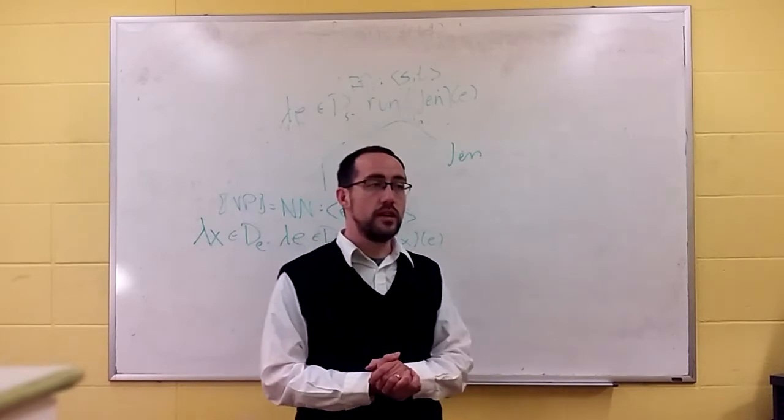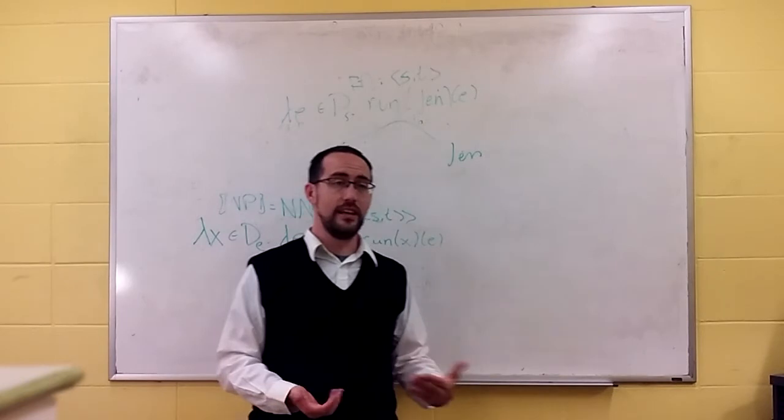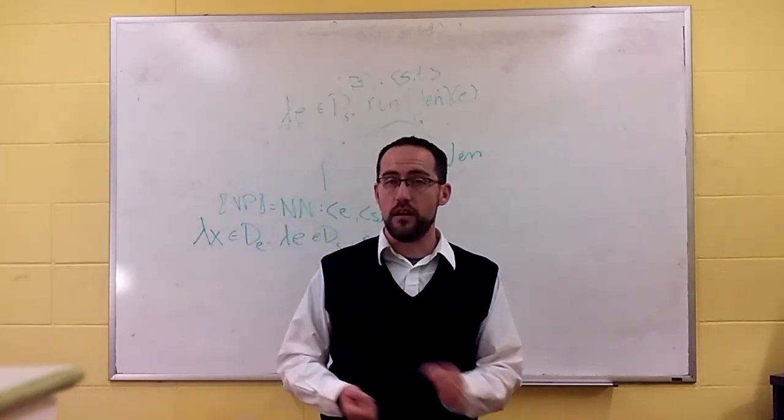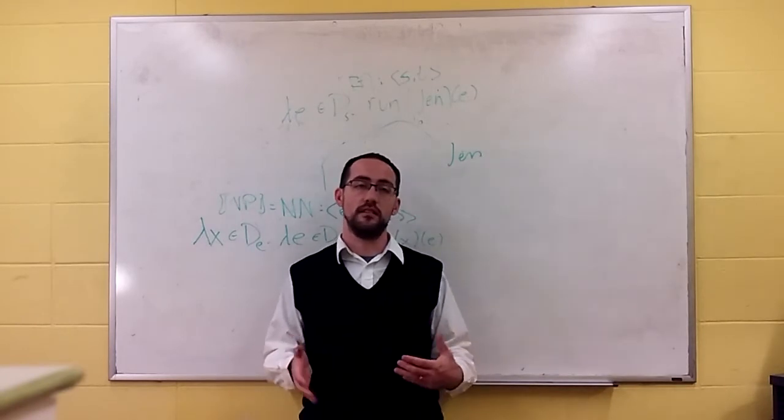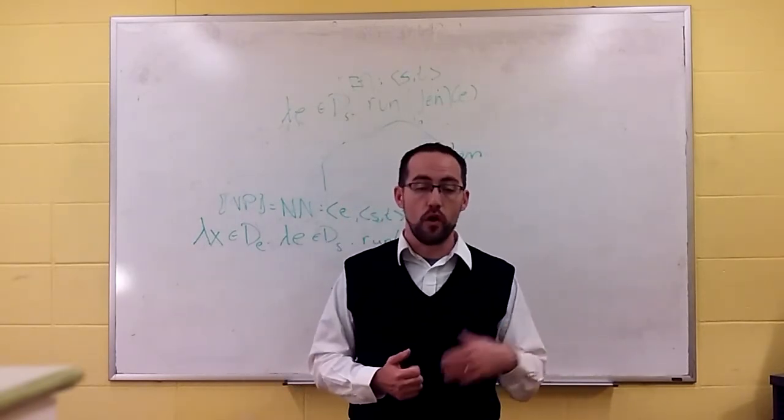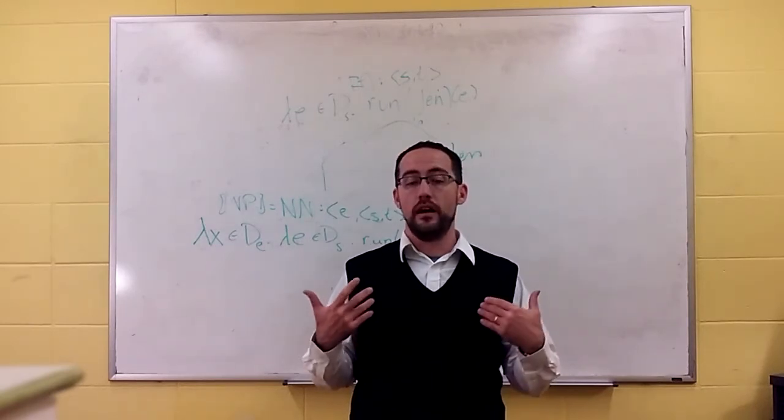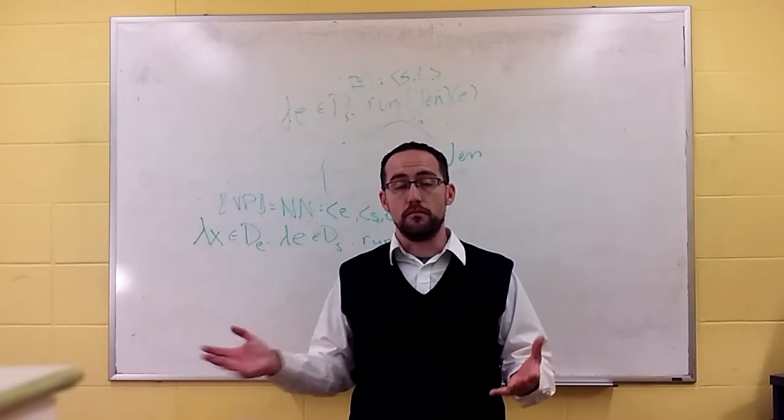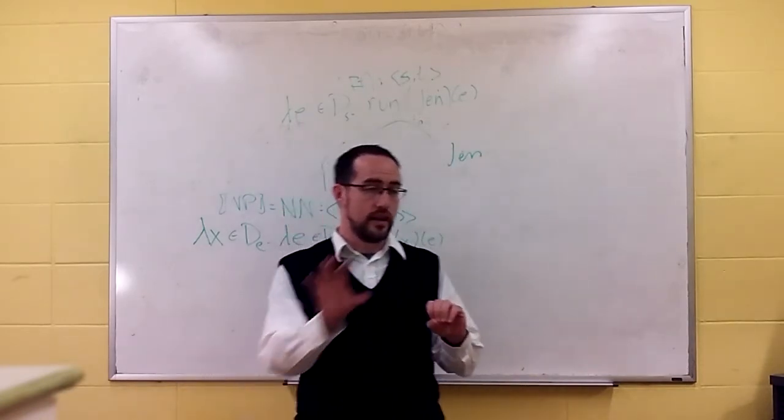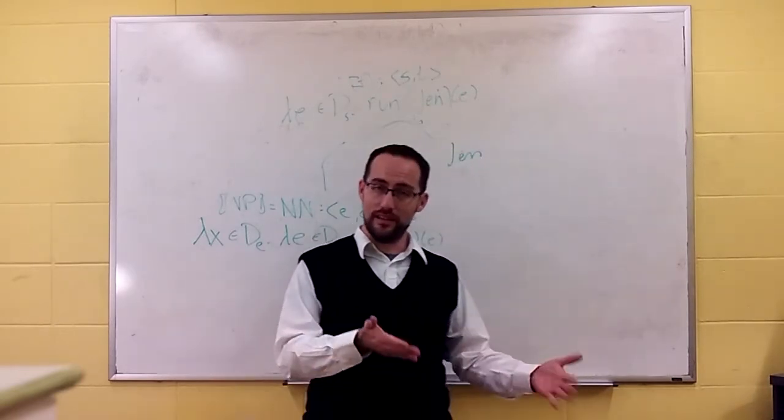So if you look at three, slowly, it's the set of slow events, right? So lambda e in d sub s, slow of e, rather than slow of x. So now it's just the things that are the events that are slow, not the individuals. Or if you look at four, in the park, we'll have the same meaning. We'll compose it with the preposition on, and it will take the park, and we'll get the set of events that take place in the park.